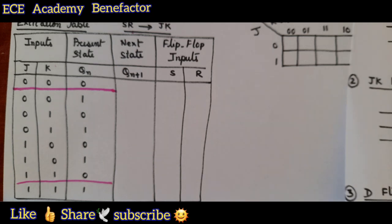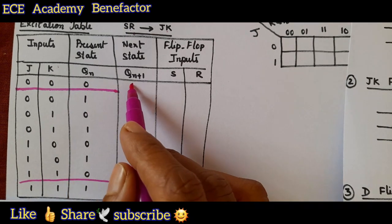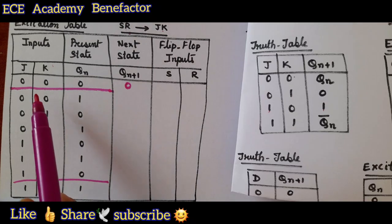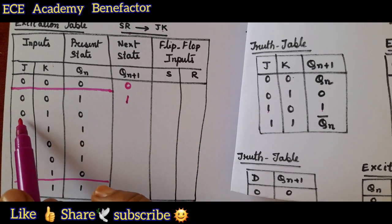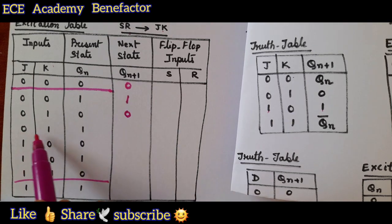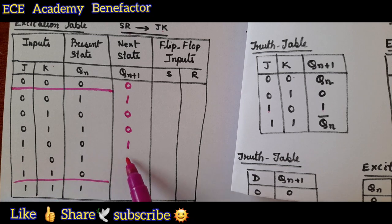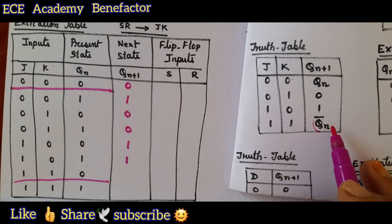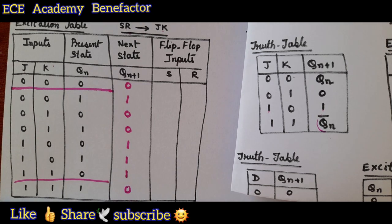Now let us fill the truth table. For J=0, K=0: Qn+1 = Qn (no change). For J=0, K=1: reset state, so Qn+1 = 0. For J=1, K=0: set state, so Qn+1 = 1. For J=1, K=1: toggle state, so Qn+1 = Qn bar — if Qn is 0 it becomes 1, if Qn is 1 it becomes 0. In this way we have completed the Qn+1 column.